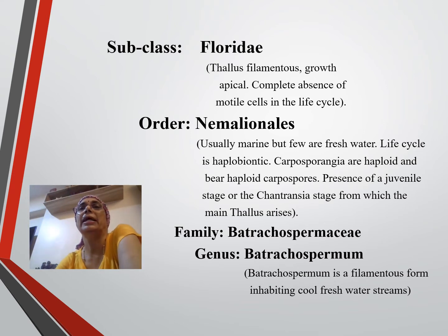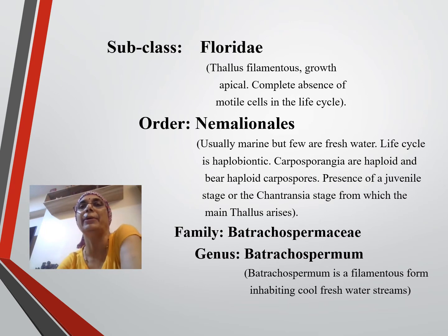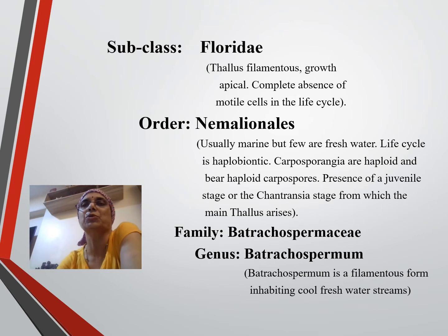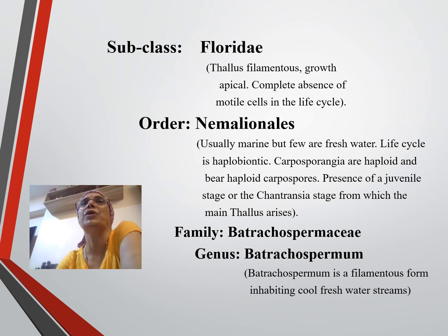Order Nemalionales. Polysiphonia belongs to Ceramiales. Usually marine, but a few are freshwater. Life cycle is haplobiontic. Carpusporangia are haploid and bear haploid carpospores. Presence of a juvenile stage, or the Cantransia stage, from which the main thallus arises. Family Batrachospermaceae and genus Batrachospermum. It is a freshwater algae, although all other red algae are marine, but Batrachospermum is a freshwater algae.